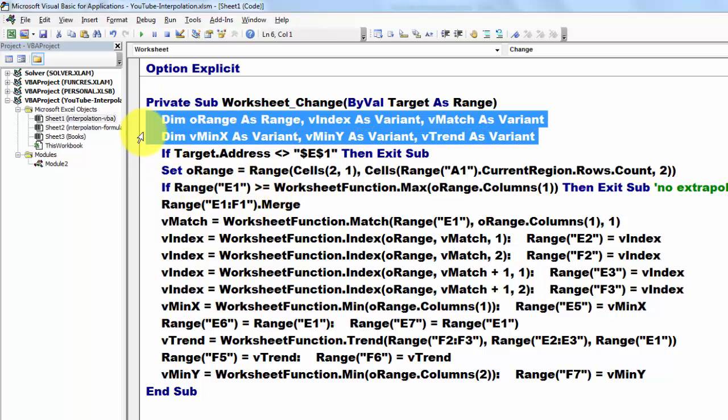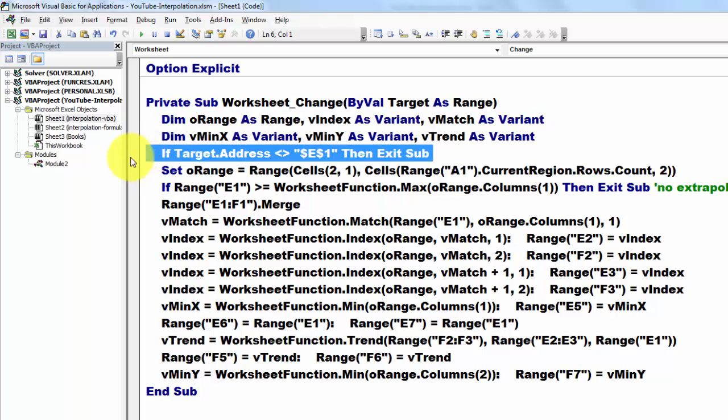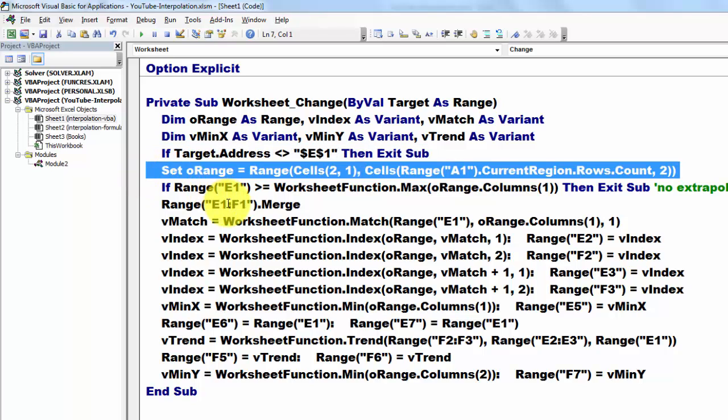We declare variables. If the user is not in E1, then exit the sub. That means the change event did not take place in E1. Otherwise, we are going to do calculations. We set O-range to the range starting in cells row 2, column 1, that is A2, through range A1 up to current region rows count. The current region is the entire little table in column A and B, comma 2.